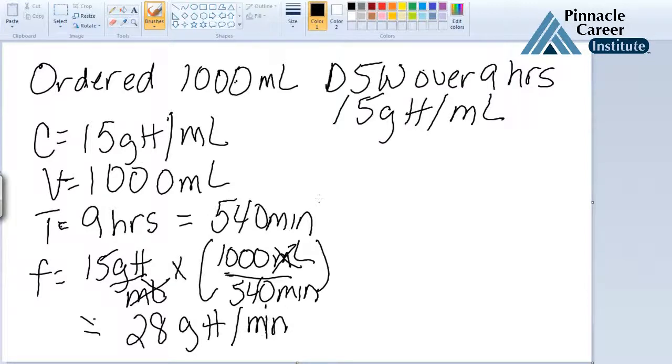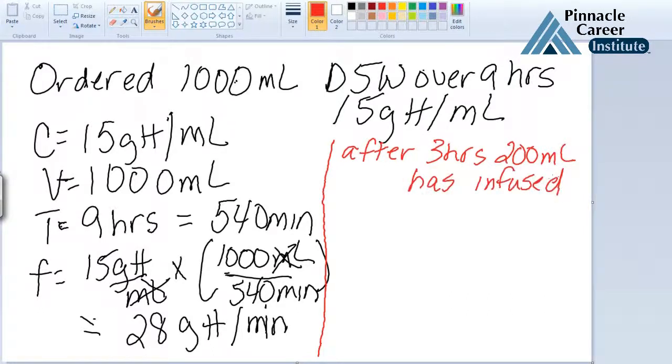Now let's look at the second half of this. After 3 hours, 200 milliliters has infused. You need to look at a couple things here. After 3 hours, 200 milliliters has infused—that means 200 milliliters is gone. So you're going to want to take your volume and adjust it. You're going to have 1,000 milliliters is what you started with. After 3 hours, 200 milliliters is gone, so you're going to have 800 milliliters now.